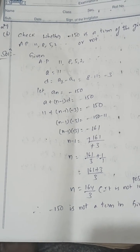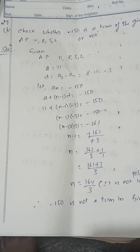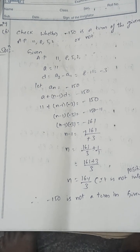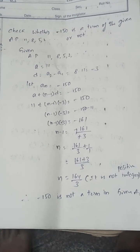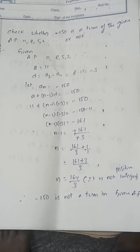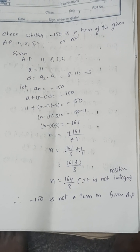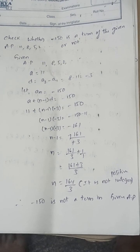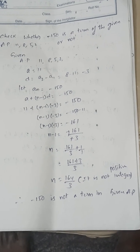Check whether −150 is a term of the AP: 11, 8, 5, 2, ... Here first term a = 11, d = −3. Using the nth term formula a + (n−1)d = −150, the value of n comes out as a fraction, not a positive integer. Therefore −150 is not a term of the given AP.